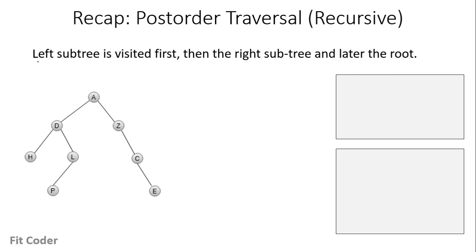In post-order traversal, first we visit the left subtree, then we visit the right subtree, and at the last we visit the root. So the order is left, right, and then root.